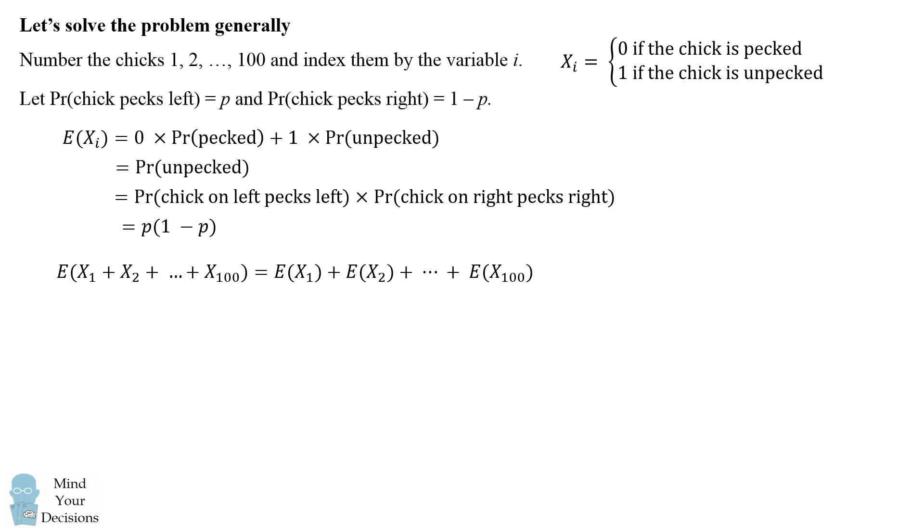Now we figured out the expected value of each x sub i is equal to p times 1-p. So we can substitute in this single value for each of these 100 different expectations. We now have 100 terms of p times 1-p.